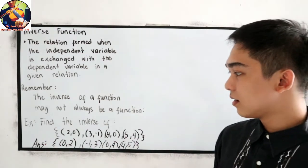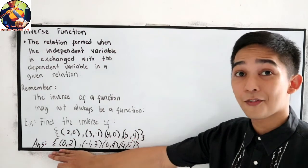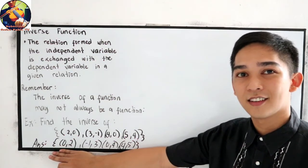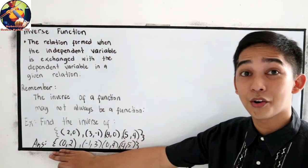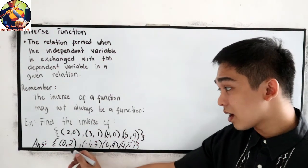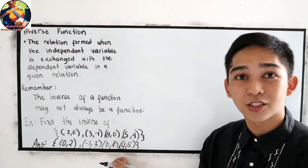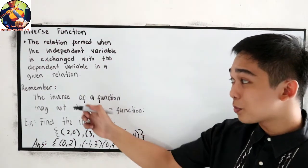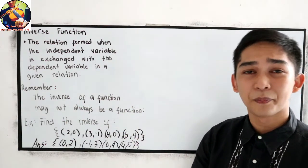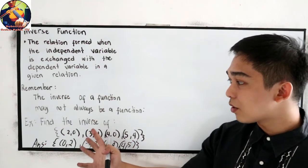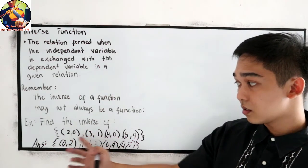Take a look at our answer. Is it a function or not? We define a function if no x coordinate must be repeated. So take a look, we have two zeros as our x. So that means this is not a function. So always remember, the inverse of a function may not always be a function.